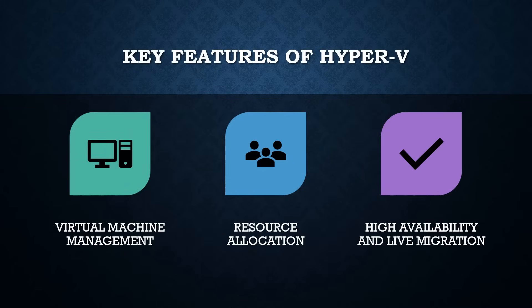Hyper-V comes with several key features. This includes virtual machine management, which allows you to easily create, configure and manage virtual machines. Resource allocation ensures that your VMs get the necessary CPU, memory and storage resources. Additionally, Hyper-V offers high availability and live migration, enabling virtual machines to move between hosts with zero downtime, ensuring continuous service availability.